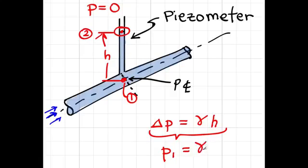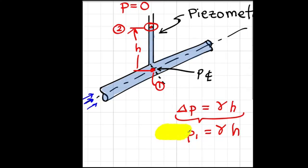is the specific weight of the liquid times the elevation difference between the center line of the pipe and the upper water level in the piezometer. So this equation is the one that we use all the time when we have a piezometer in order to calculate the pressure.